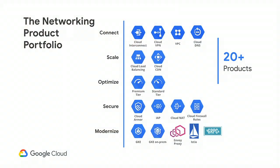What we really wanted to talk about at this next stage is how do we start mapping these analogs into Google Cloud solutions specifically. Here you get a snapshot of what the Google Cloud networking product portfolio looks like today — 20-plus products and services all focused on enabling your journey to the cloud. We've grouped these into different sections representing the way customers think about the cloud: connecting, scale, optimize, security, and modernize.